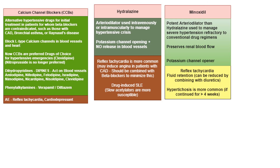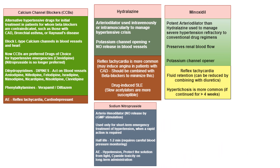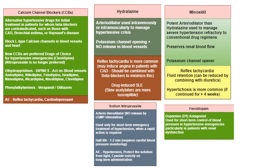Sodium nitroprusside is both an arterio- and venodilator — it dilates both arteries and veins. It is a nitric oxide releaser acting by stimulating cyclic GMP in blood vessels. It is used only for short-term emergency treatment of hypertension when rapid action is required. The half-life is just one to two minutes, requiring careful blood pressure monitoring as hypotension may occur immediately. The solution must be protected from light. On chronic use it may lead to cyanide toxicity. Fenoldopam is a dopamine D1 agonist used for short-term control of blood pressure in hypertensive emergencies, particularly in patients with renal dysfunction.